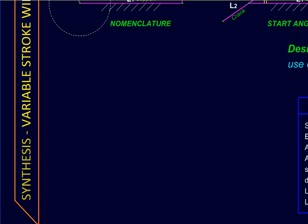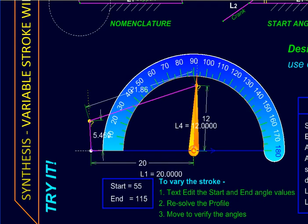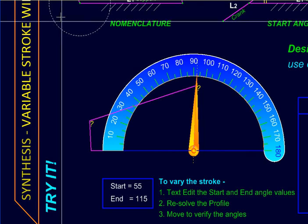And finally, here we have our design. The windshield wiper whose stroke can be varied. Let us verify the design.